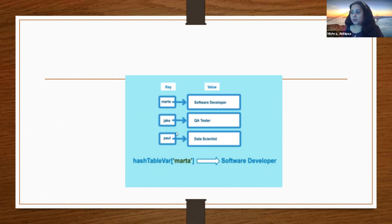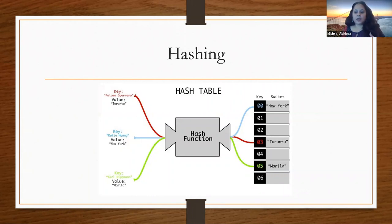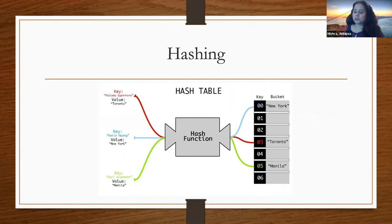Why hash tables are so fast comes down to the concept of hashing. Hashing uses a hash function on the key you want to store in the hash table. The hash function generates a code — essentially an index — where it stores the key-value pair. When you want to retrieve that data again, it computes the hash of that key and immediately finds the index where it was stored. This makes hash tables a suitable data structure for any kind of speedy lookups.